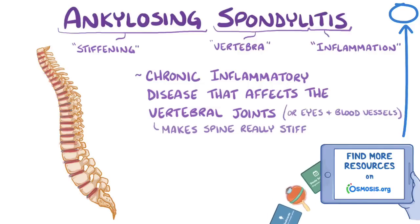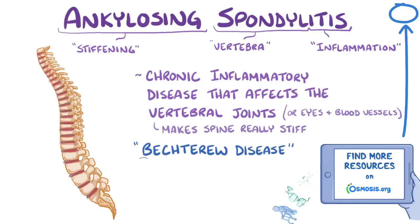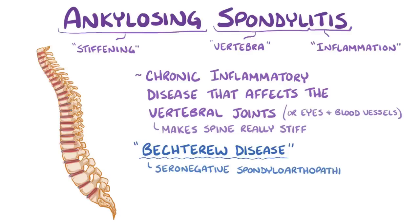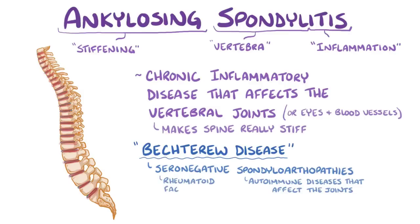Ankylosing spondylitis, also called Bechterew's disease, is part of a group of diseases called seronegative spondyloarthropathies. Spondyloarthropathies are all autoimmune diseases that affect the joints, and they're seronegative, which refers to the fact that rheumatoid factor, which is an autoantibody, is not found in the blood.